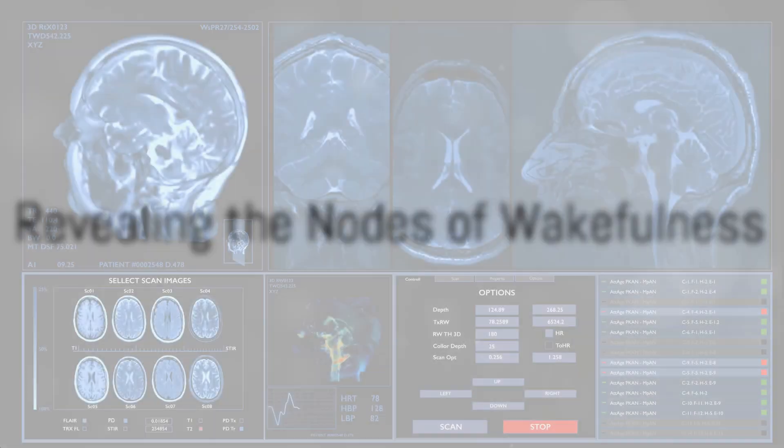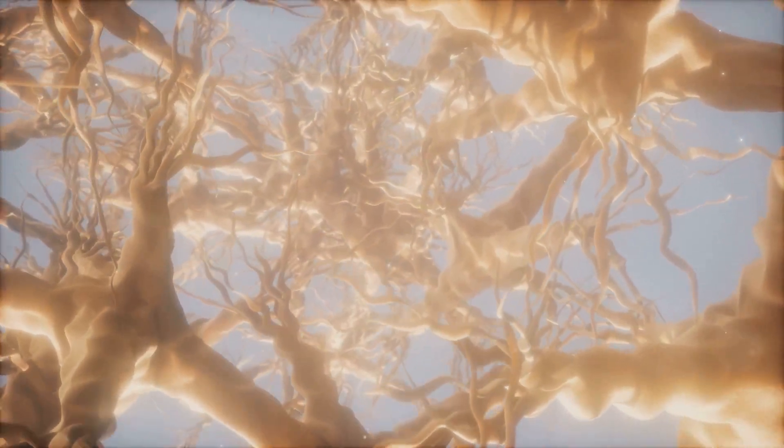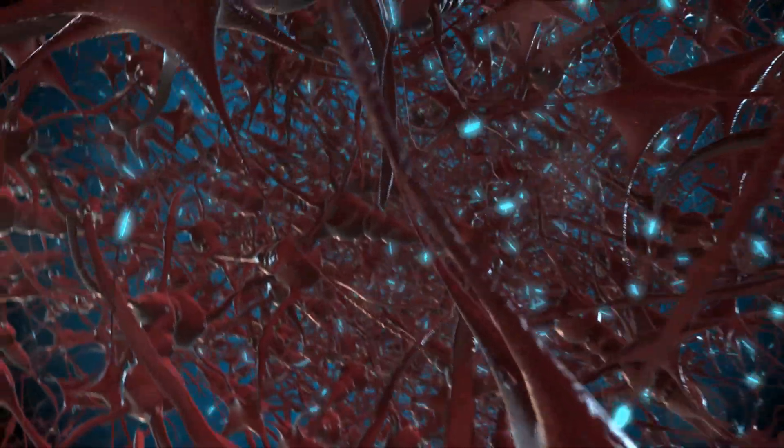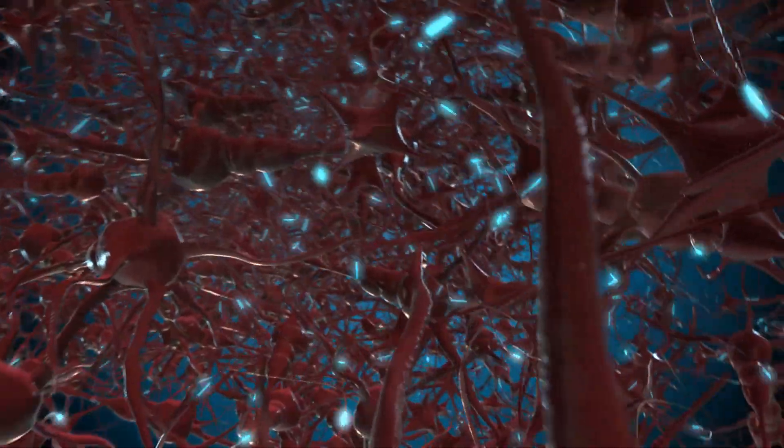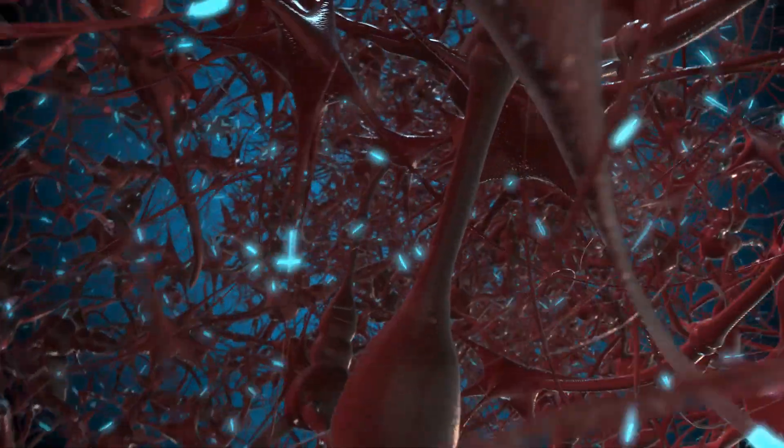The results of this painstaking research were nothing short of fascinating. The team's meticulous investigations led to the discovery of the primary nodes of the wakefulness network nestled within several subcortical structures, namely the brainstem, hypothalamus, and thalamus, as well as a segment of the cortex referred to as the basal forebrain.